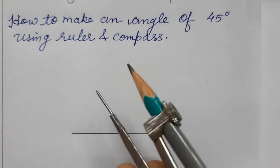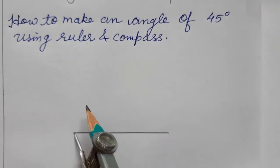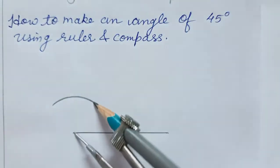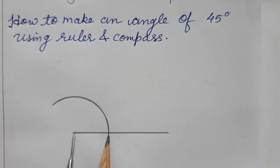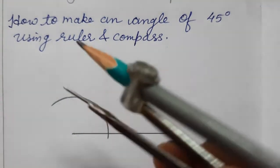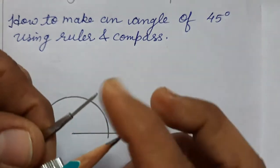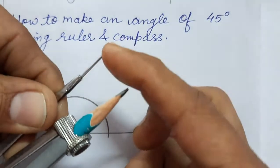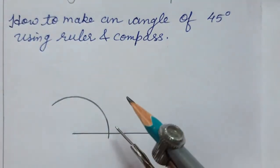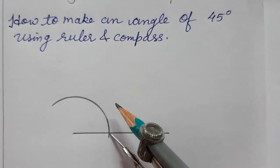So we will make convenient arc radius. We have made an arc, this is arc. Without disturbing the arc radius, we will not disturb it, and we will keep the pointer here. This pointer we have made here.